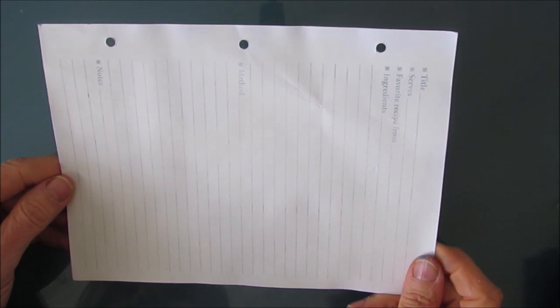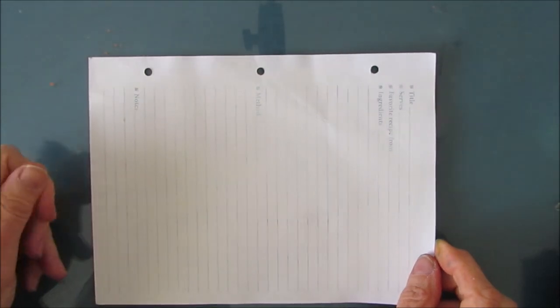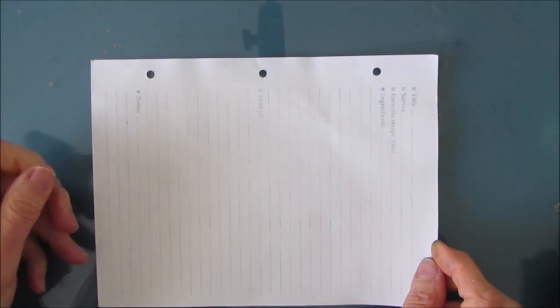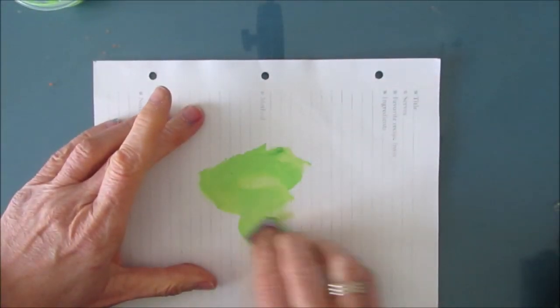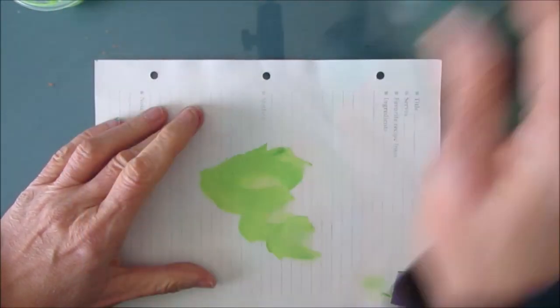This page is from a recipe binder. It measures about six and a half by eight and a half. It's a great size and I've done a coat of gesso on it and that's important.